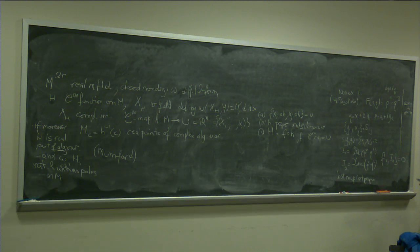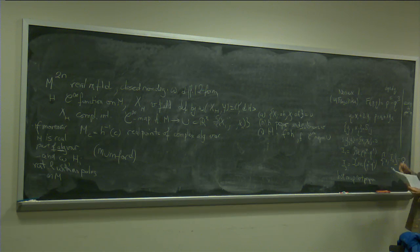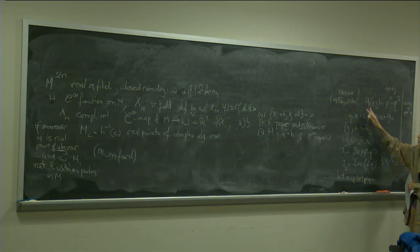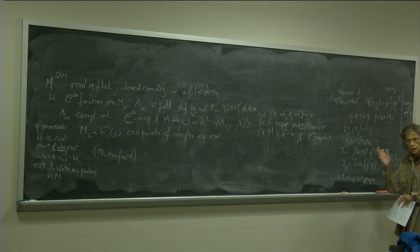So this is topologically non-ACI. The f written at the top is the Hamiltonian h. So this is topologically non-ACI because the map is not proper. The invariant manifolds are non-compact. So this is topologically non-ACI.